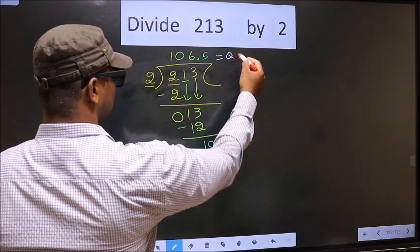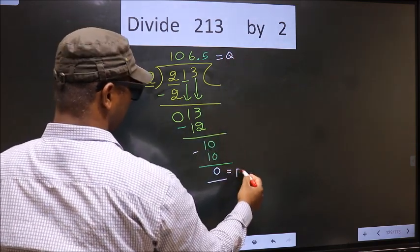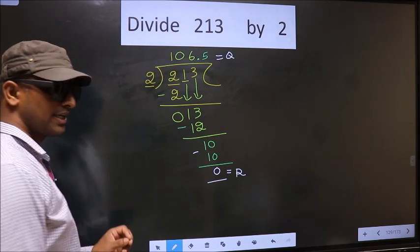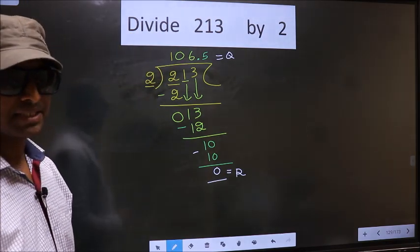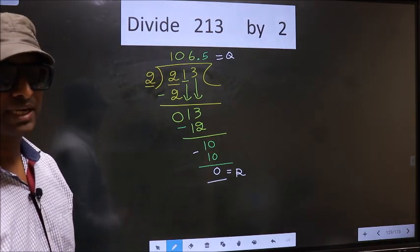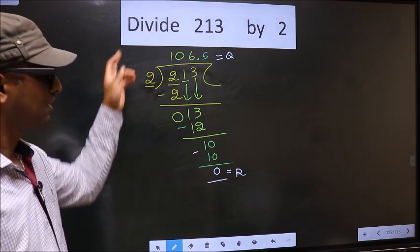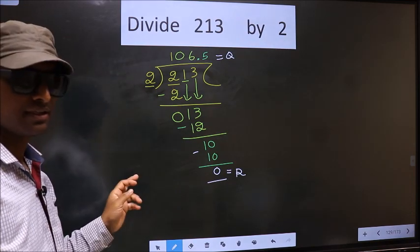So this is our quotient and this is our remainder. Did you understand where the mistake happens? You should not do that mistake. Am I clear?